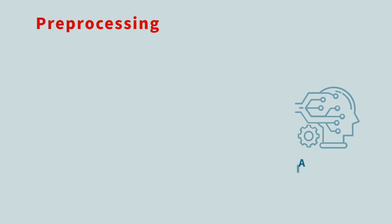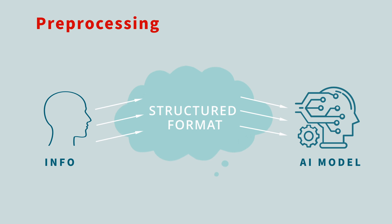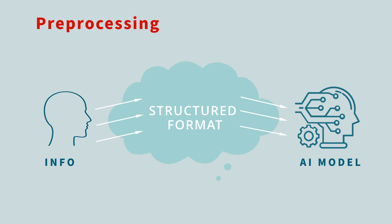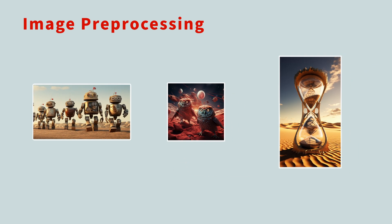When building and using an AI model, you need to give it information in a form it can understand. This usually involves transforming the input data into a structured format, which reduces the amount of work for the model to learn and make predictions. This step in data preparation is known as preprocessing. When working with images, for example, preprocessing might involve resizing the images to fit within a certain region.